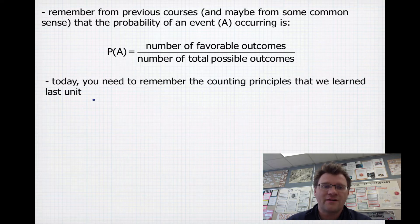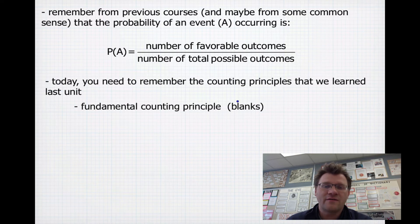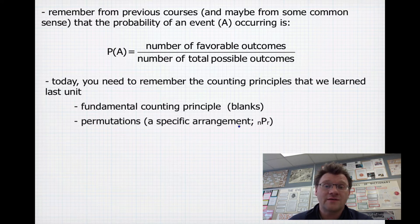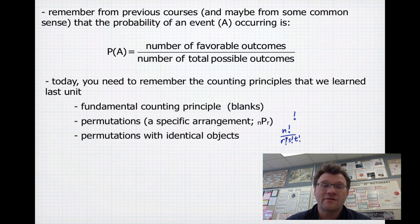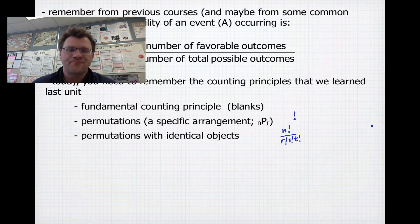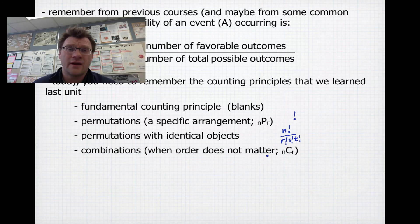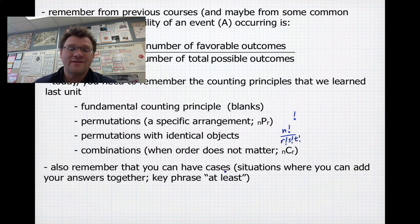Today you'll need to remember the counting principles from last unit: the fundamental counting principle, which involves filling in the blanks and works for most permutation-type questions but not all; permutations, which are arrangements using the nPr button or factorials; permutations with identical objects, using N factorial over R factorial times S factorial times T factorial, etc., where N is the total number of objects and R, S, T are the counts of identical items; combinations, when order doesn't matter, using the nCr button; and cases, where you add answers together, often used with phrases like 'at least.'